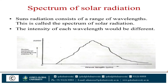Spectrum of solar radiation: The Sun's radiation consists of a range of wavelengths — this is called the spectrum of solar radiation. The intensity of each wavelength is different, and this is shown on a graph of intensity versus wavelength for the solar spectrum radiation.